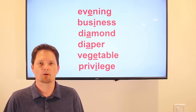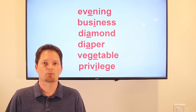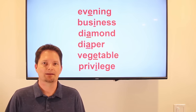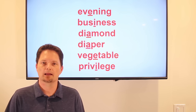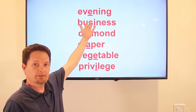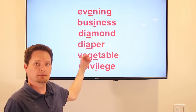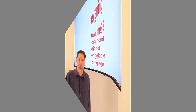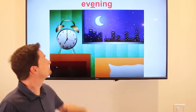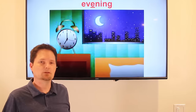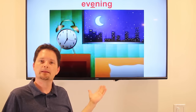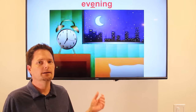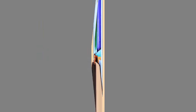Hello, welcome to English for Everyone. Today we're talking about words that are difficult to pronounce — they have silent syllables and silent letters. We're looking at: evening, business, diamond, diaper, vegetable, and privilege. Our first word is evening. The E is silent — we don't say 'evening,' we say 'evening.' In the evening, I usually have dinner — in the morning, in the afternoon, and in the evening.